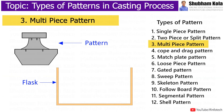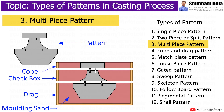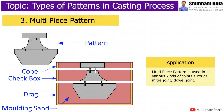Multi-piece pattern is used when casting has a very difficult and complicated design. In this type, three or more pieces consist of top, bottom, and middle parts. The bottom part is drag, the top part is cove, and the middle part is termed as checkbox. This type of pattern is used in various kinds of joints such as metri joint and dual joint.